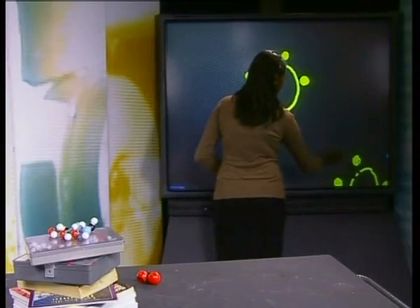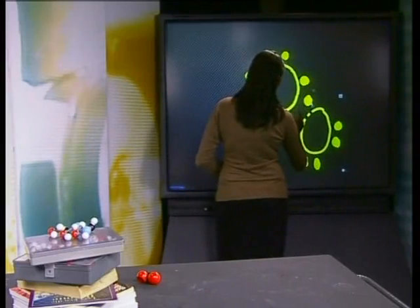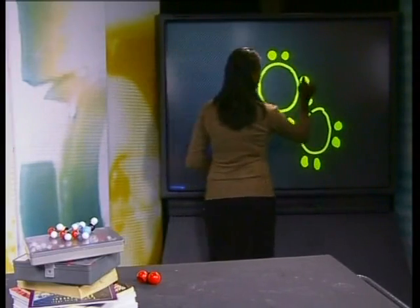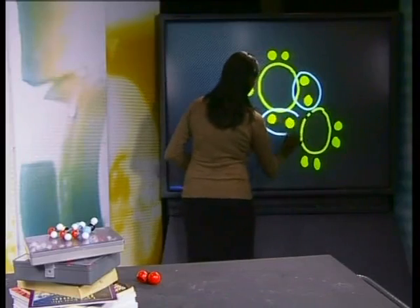Notice that the unpaired electrons are next to each other. When another oxygen atom comes close to this atom, they can combine and they will share the two pairs of electrons. This is called a double covalent bond.